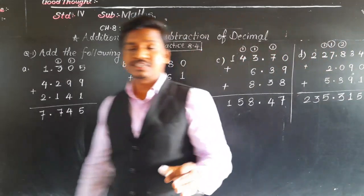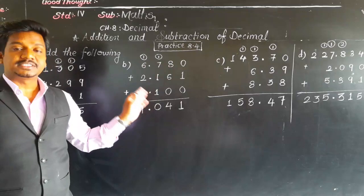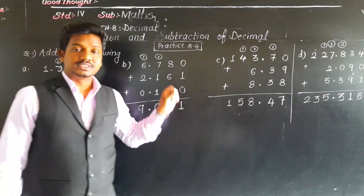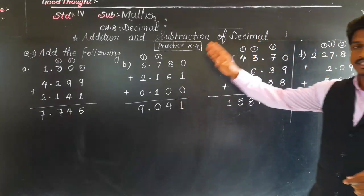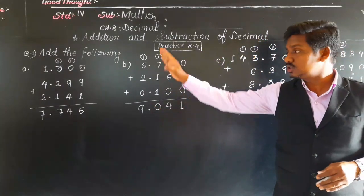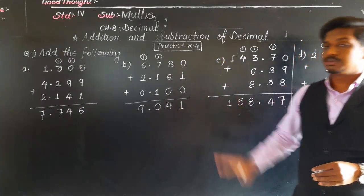Addition and subtraction of decimals is very easy as we have to do it as usual. Just if the decimal places are different, put 0 and make them equal. Now pause this video and write this in the textbook only. I saw this in the textbook only, there is space in the textbook. Now pause video and write.